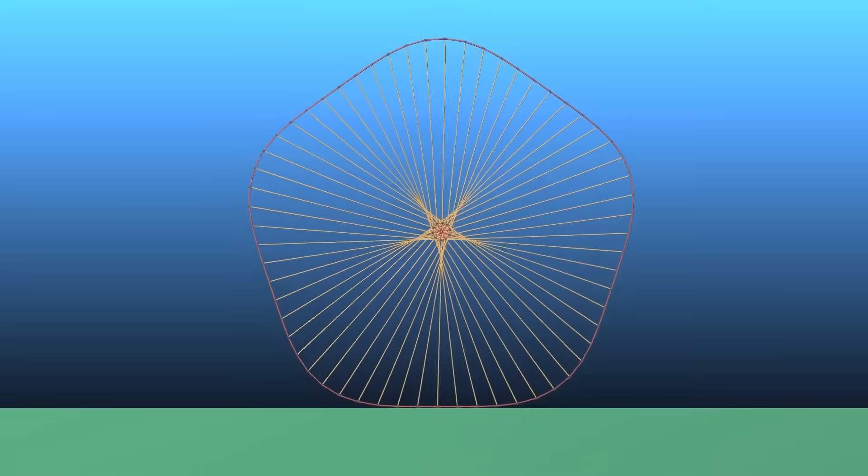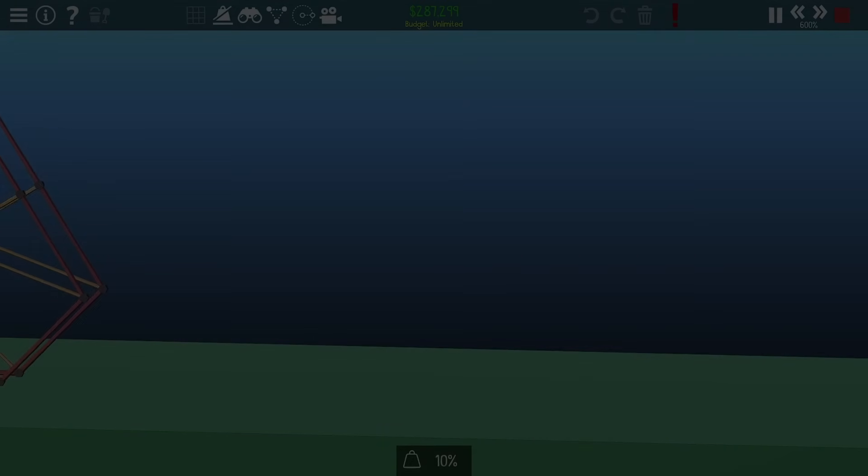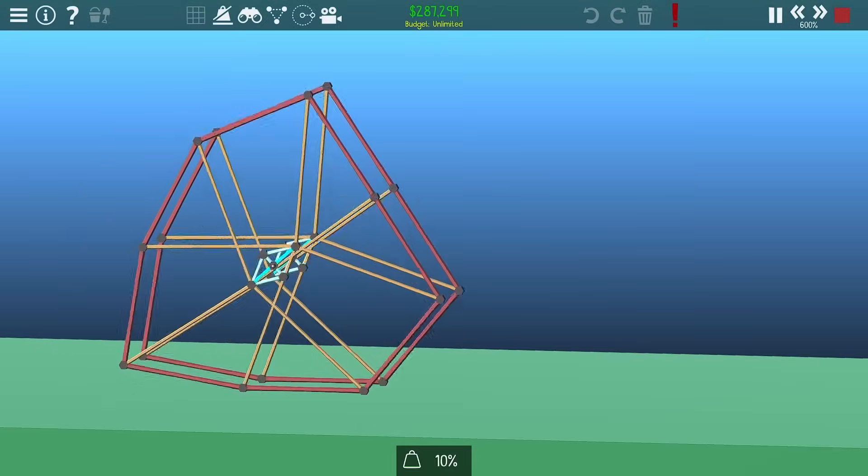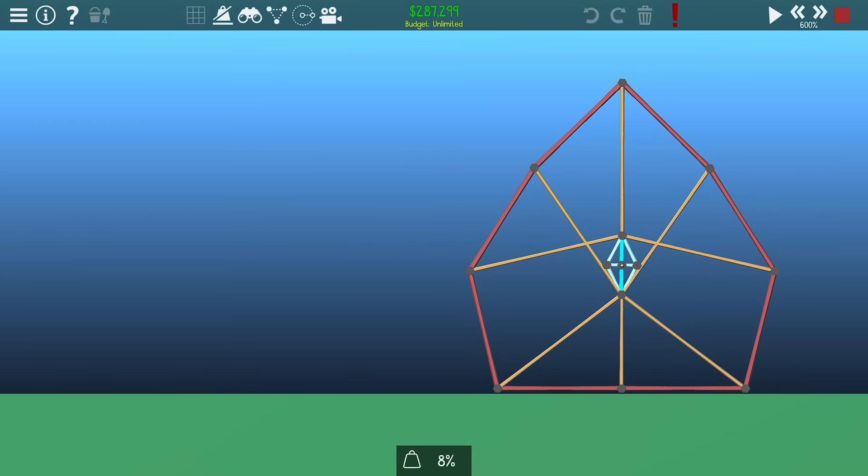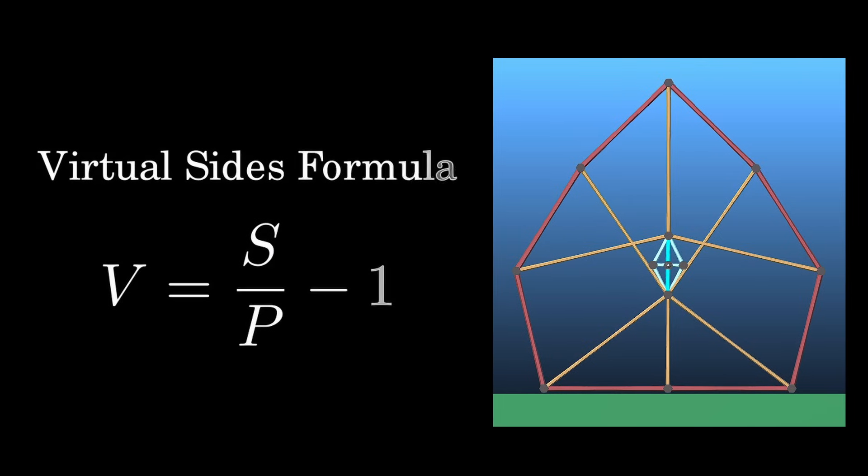There's just one catch though. Let's revisit the original design that initiated this exploration. Eight sides and two pedals. Using the formula, this categorizes it as part of the triangle wheels family. So, where are the rest of them?